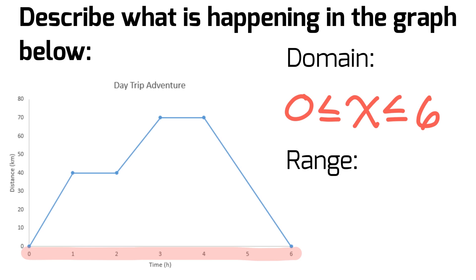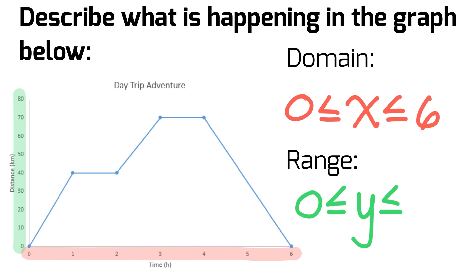Our range refers to the y-axis. Highlighting those values, we can see they run from 0 to 80. The variable we're looking at is y, and the lowest value y is on that graph is 0 and the highest value is 80, so y must be between 0 and 80.